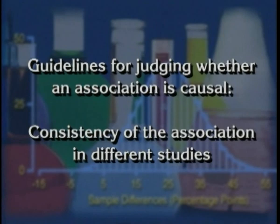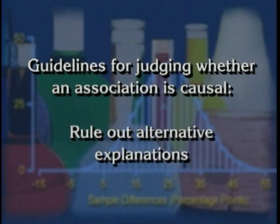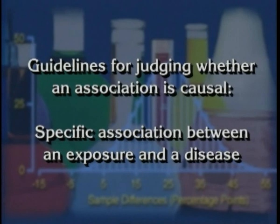The association should also be consistent in different studies. And if we remove the exposure, we would expect that the risk of disease would go down. The relationship suggesting causation between exposure and disease should be biologically plausible, and we should rule out alternative explanations. It has also been suggested that the association be specific for a certain exposure and a disease.